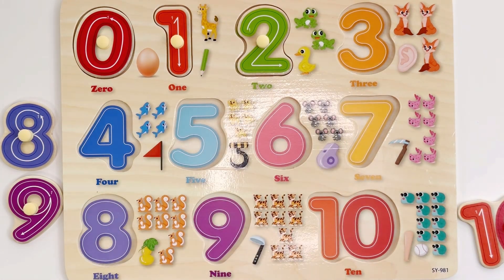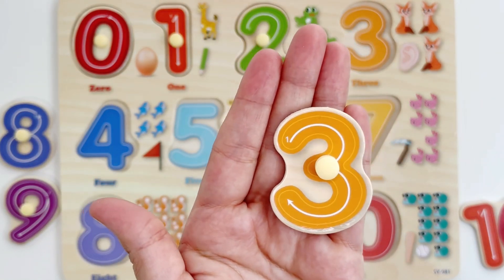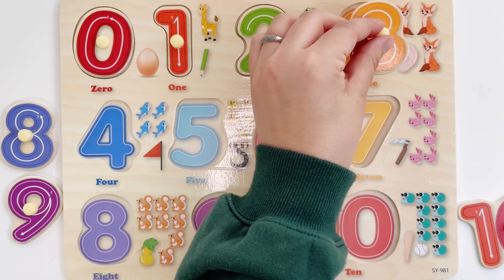Next is our number three. Number three is the color orange. Number three goes over here.